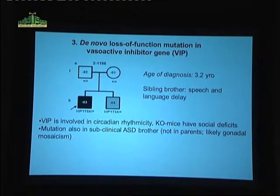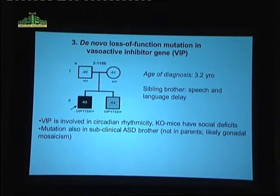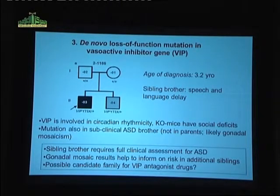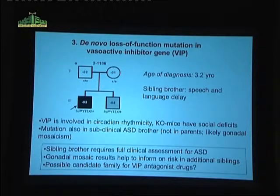This is explained most likely by gonadal mosaicism in one of the parents. This would be an interesting example where the clinical genetics is a little more complicated, because neither parent is a carrier — emphasizing the need to really check families when doing these studies. The sibling brother requires full assessment. The gonadal mosaic result helps to inform on risk in additional siblings. There are also VIP antagonist drugs that could be used to try to treat these children.